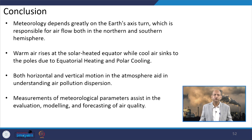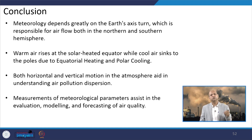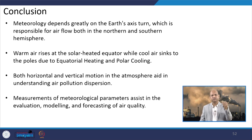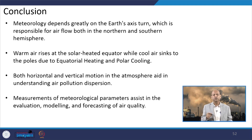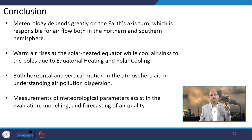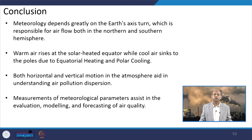In conclusion, meteorology plays a very important role: because of the earth's surface and its axis tilt, wind patterns and temperature differences exist in both northern and southern hemispheres. Warm air rises at the solar-heated equator while cool air sinks at the poles due to equatorial heating and polar cooling. There are different cells, and importantly at 30 degree latitude where the Hadley cells descend, warm air without much moisture means deserts are found around the globe at 30 degree latitude. Both horizontal and vertical motions in the atmosphere aid in understanding air pollution dispersion, and measurements of meteorological parameters play a role in evaluation, modeling, and forecasting of air quality.